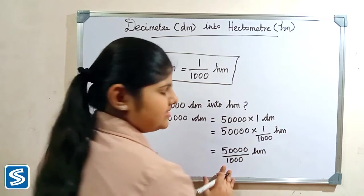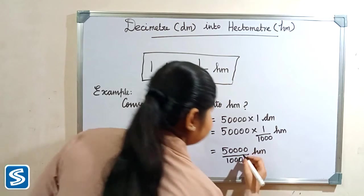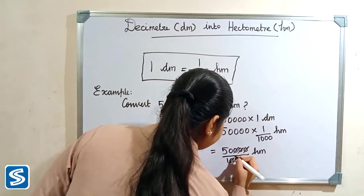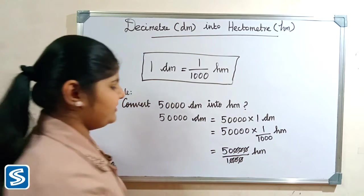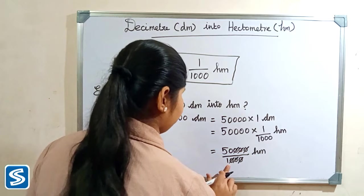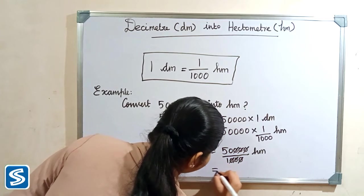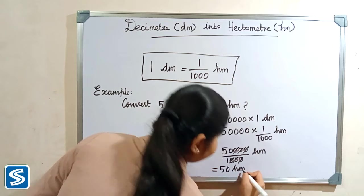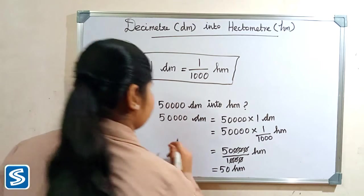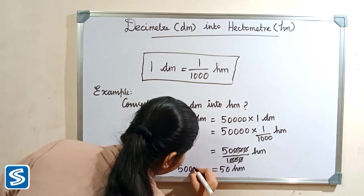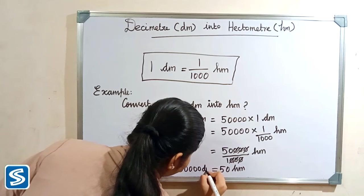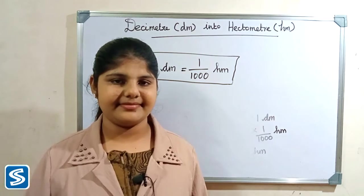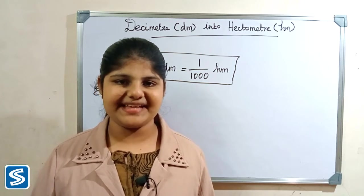Here the zeros get cancelled. When we divide 50,000 by thousand our answer will be 50. So 50,000 decimeter is equal to 50 hectometer. Now we will take one more example.